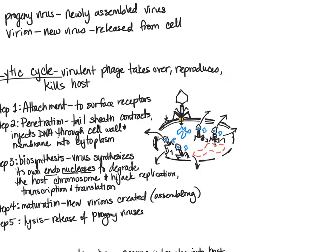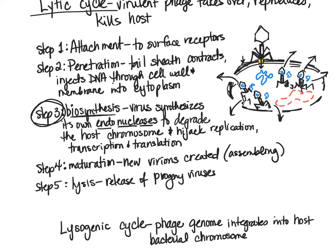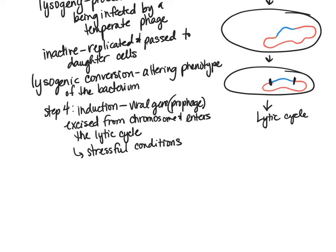Once the prophage is excised and the lytic cycle begins, since we're already inside the cell, we enter at step three — biosynthesis. The virus synthesizes endonucleases, degrades the host chromosome, hijacks replication, transcription, and translation machinery, then goes through step four maturation (assembling new viruses), and step five lysis (bursting out of the cell), just as described in the lytic cycle.